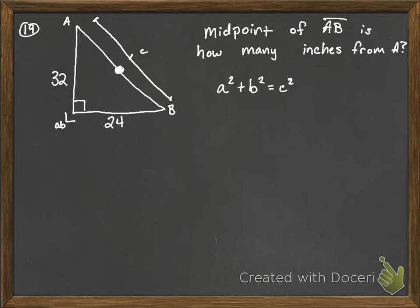So my A here is going to be 32 squared plus my B is 24 squared, and that's equal to C squared. So what we need to do is we need to take our calculator and we can plug these in.